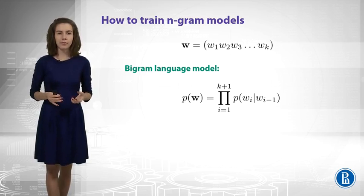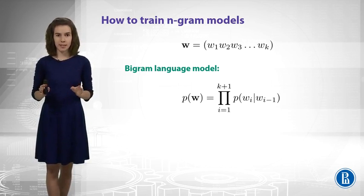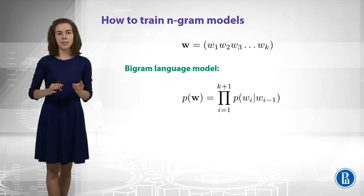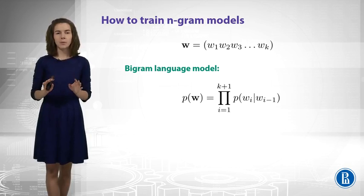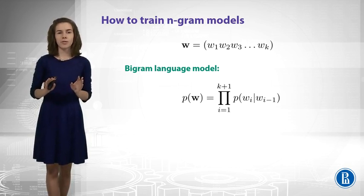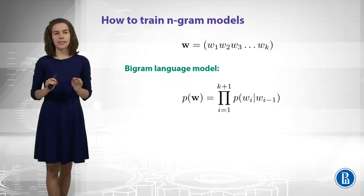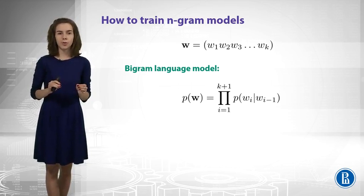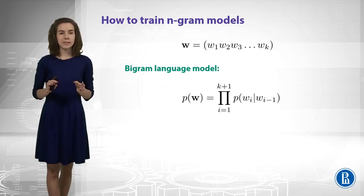We learned that with Bigram language model you can factorize your probability into terms - the probabilities of the next word given the previous word. Now, take a moment to see whether everything is okay with the indices on this slide. You can notice that i can be equal to 0 or 2k plus 1, and it goes out of range of our sequence.